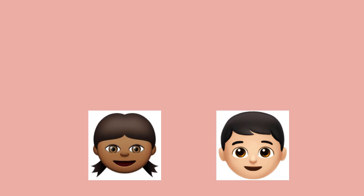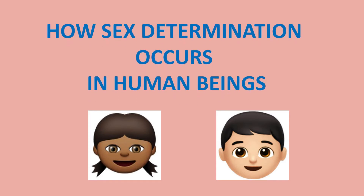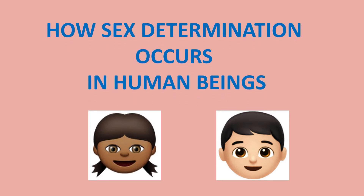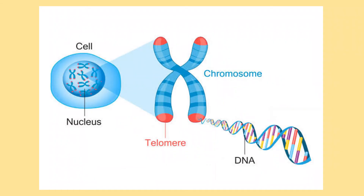Hello, welcome to our YouTube channel. In this video we are going to learn about how sex determination occurs in human beings. In earlier videos we knew that two factors are responsible for each character, and nowadays these factors are known as genes, and genes are located in every cell.